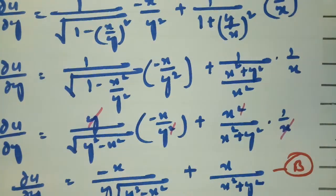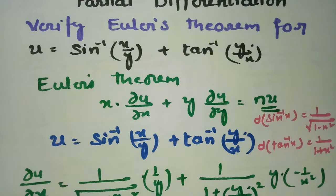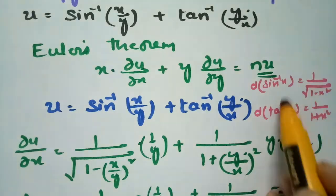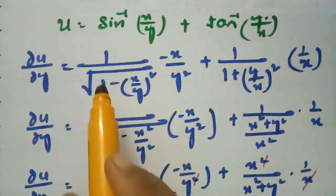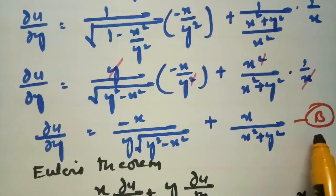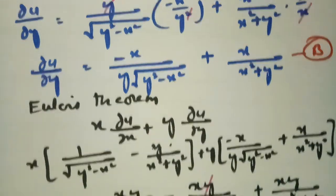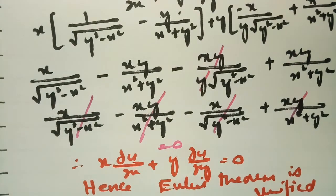This is how we solve this problem — it is simple if you follow these steps. U is given, and according to Euler's theorem x into ∂u/∂x plus y into ∂u/∂y equals n into u. I made the derivative with respect to x as equation A and with respect to y as equation B. Substituting into the LHS, I got 0, so n equals 0 and Euler's theorem is verified. Thank you so much for watching, please have a look at my next video too.